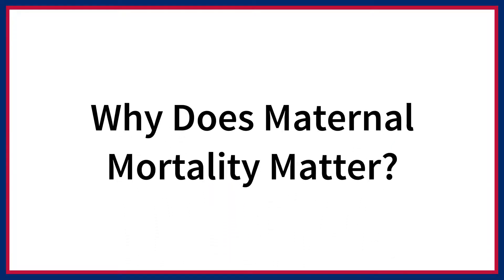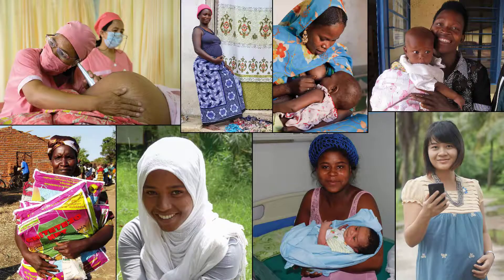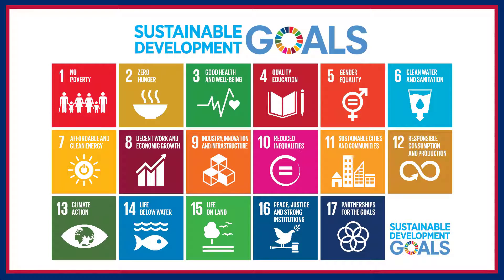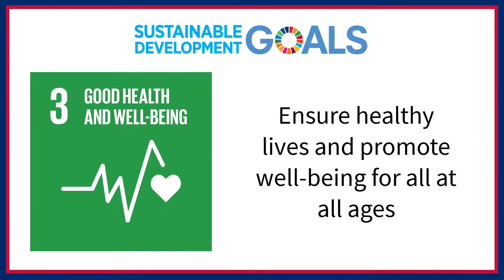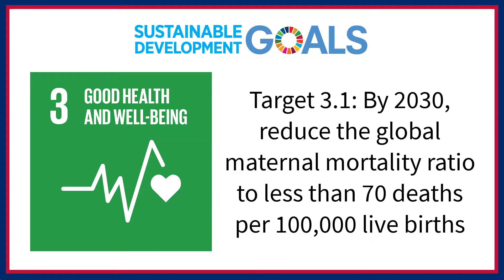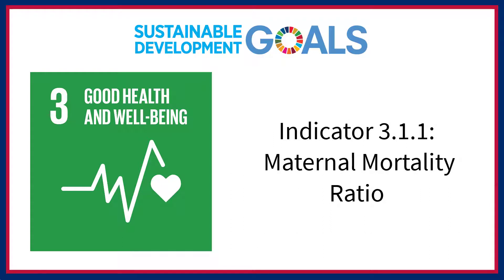Why does maternal mortality matter? Complications during pregnancy and childbirth are a leading cause of death and disability among women of reproductive age in developing countries, though the vast majority of maternal deaths are preventable. The maternal mortality ratio is used to measure progress in achieving the Sustainable Development Goals, or SDGs. The third SDG targets ensuring healthy lives, and SDG Target 3.1 is the reduction of the global MMR to less than 70 deaths per 100,000 live births by 2030. The MMR is SDG indicator 3.1.1.